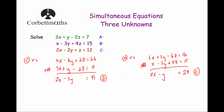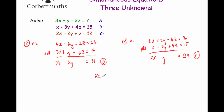Now we're going to solve the simultaneous equations D and E, just like the ones you already know how to do. We have 7x minus 3y equals 31 and 7x minus y equals 29. Notice that both equations have 7x, so we can subtract them to cancel out the x's. Let's write them one above the other.